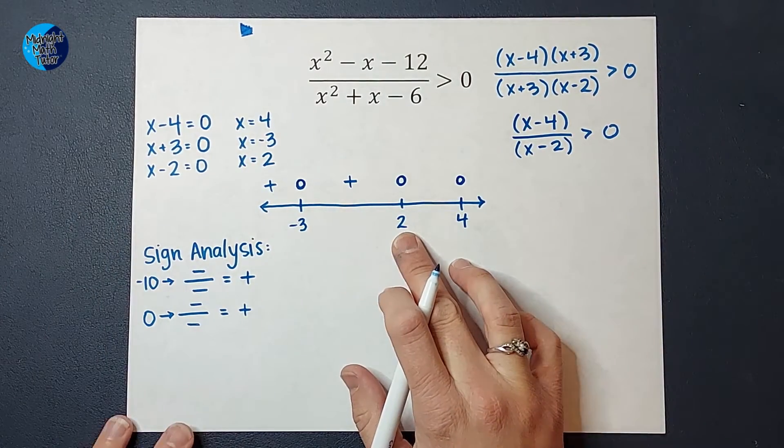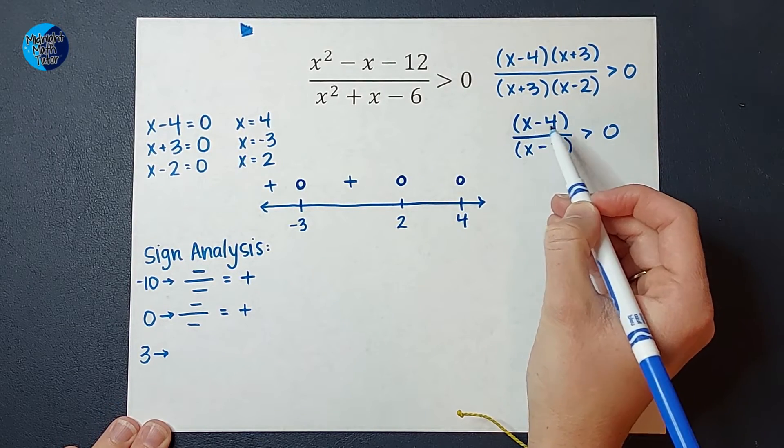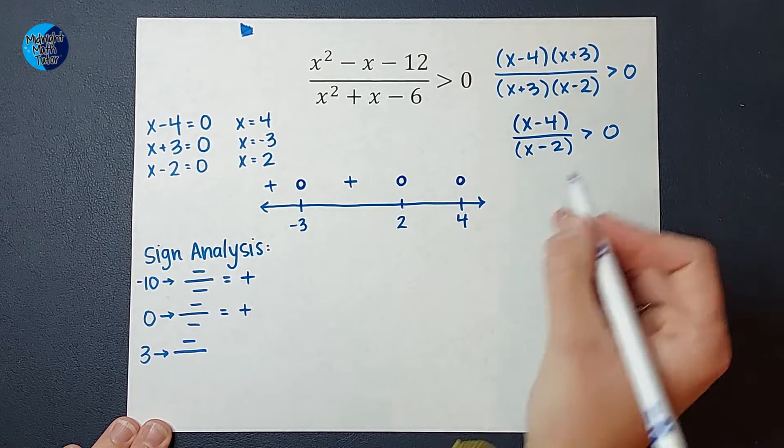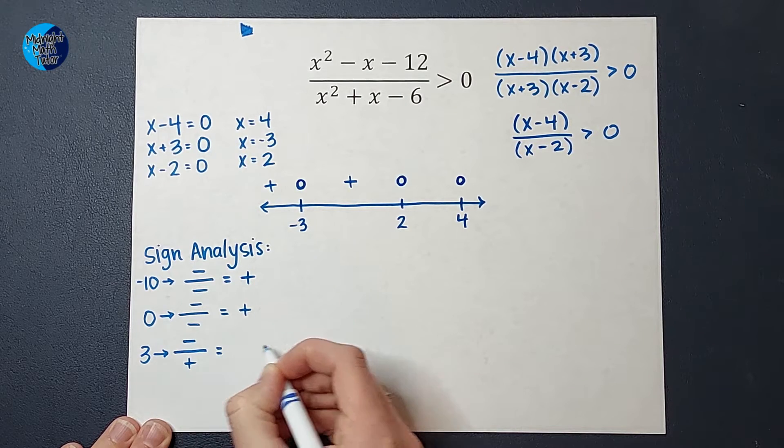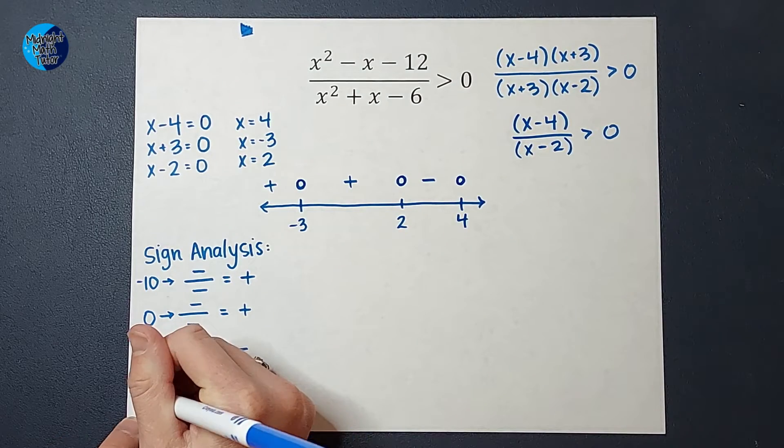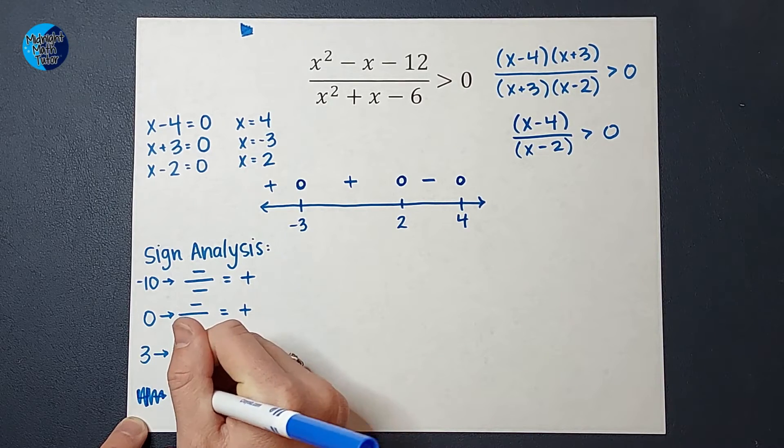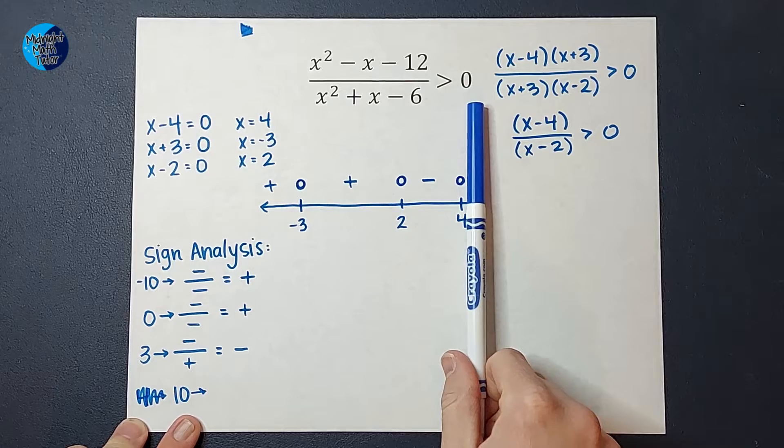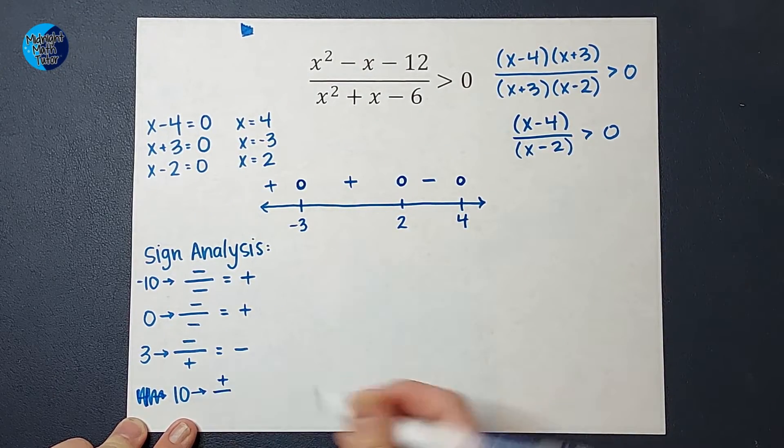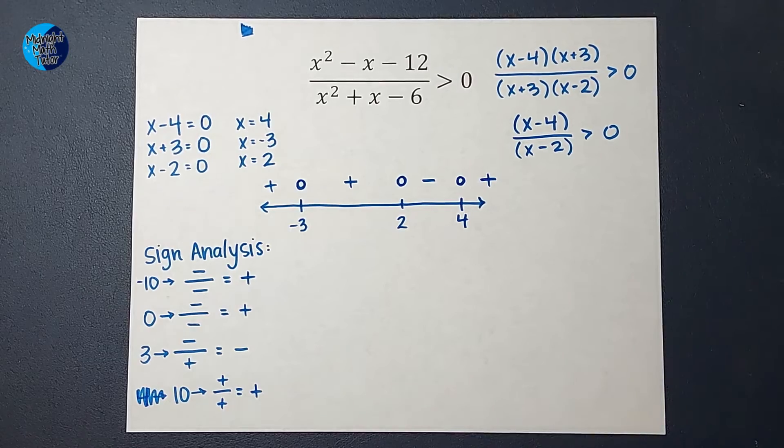All right. Let's pick a number between 2 and 4. Let's pick 3. When I plug in 3, I get 3 minus 4, which would be negative, over 3 minus 2, which would be positive. And a positive, sorry, a negative divided by positive is negative. All right. Now I need a number bigger than 4. Let's just pick 10. Oh, I wrote 4. Number bigger than 4. 4 is not bigger than 4. We're picking 10. So if I plug in 10, I get 10 minus 4. That's positive. Over 10 minus 2. That's positive. And a positive divided by positive is positive. Woohoo!